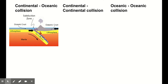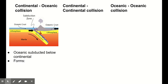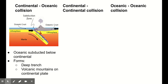So that melting crust bubbles up right through the continental crust and forms a volcano on the continental crust. In our continental-oceanic collision, we get a deep trench formed. We get volcanic mountains formed on the continental plate. We get earthquakes — it's a plate boundary and we always see earthquakes.